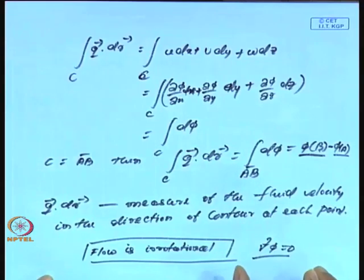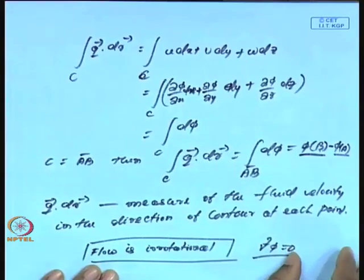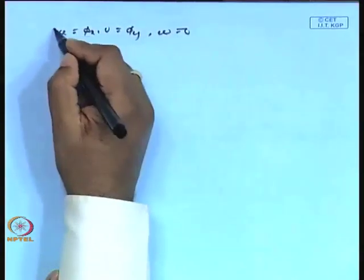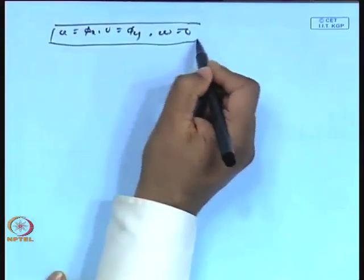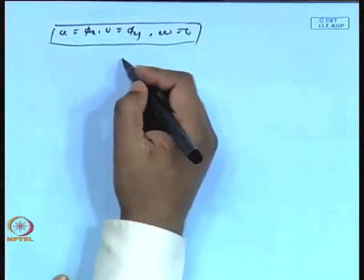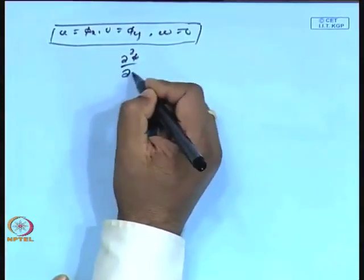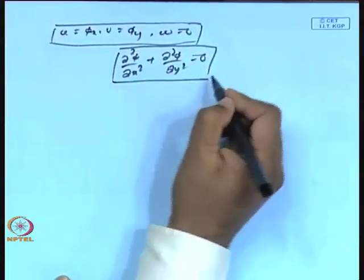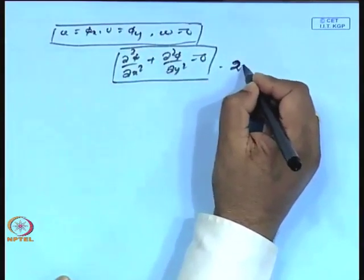For irrotational flow — vortex-free motion — whether two-dimensional or three-dimensional, we always have the velocity potential. For a two-dimensional flow with u = ∂φ/∂x, v = ∂φ/∂y, w = 0, the continuity equation gives ∂²φ/∂x² + ∂²φ/∂y² = 0, which is the two-dimensional Laplace equation.